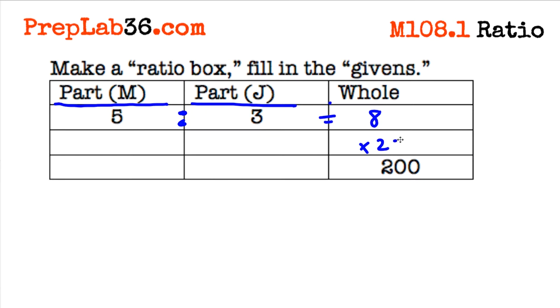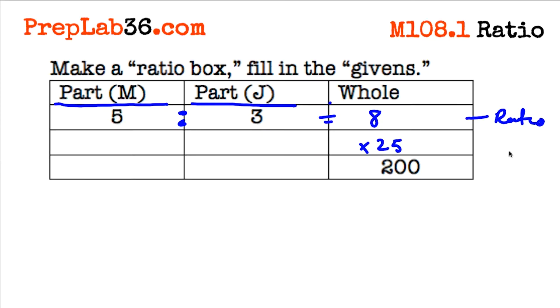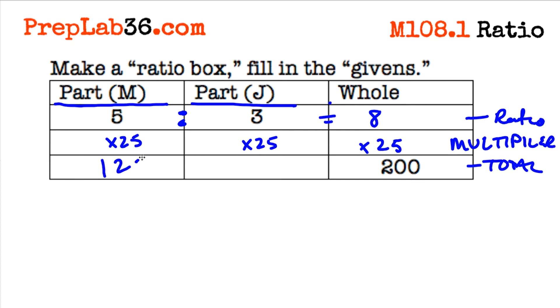Remember, ratios are reduced, so a reduced number is a number divided. We have 8 total, and the total number of students is 200. So we divide 200 by 8, and get a multiplier of 25, because 8 times 25 equals 200. In our box setup, this is the ratio line, this is the total line, and in the middle is the multiplier. You multiply 3 times 25, 5 times 25, and 8 times 25. 5 times 25 is 125, 3 times 25 is 75, and 125 plus 75 equals our total of 200.